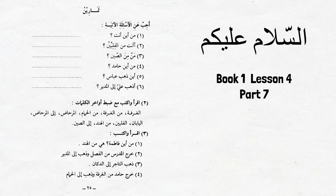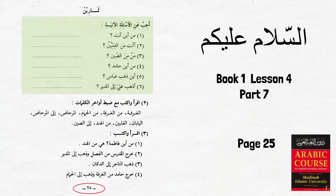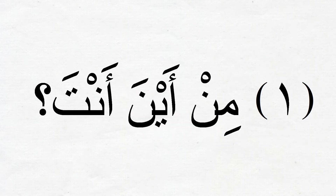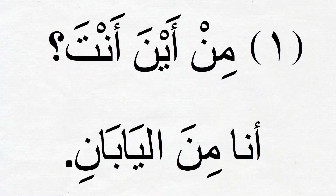Let's try to answer the questions given on the top half of page 25 based on what we read in the dialogue on page 24 last time. The first one is min aina anta, which literally translates to 'from where are you.' This question was directed to Muhammad. Muhammad is from Japan, so we should say 'I am from Japan.' In Arabic: Ana min al-Yabani.